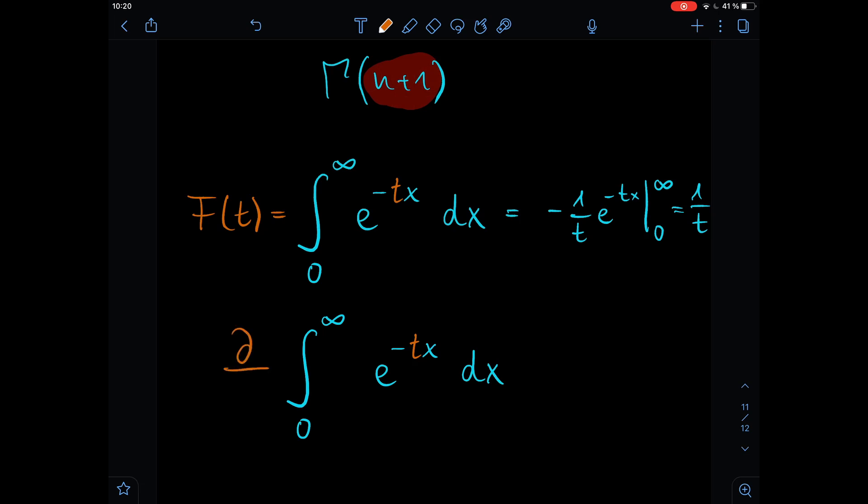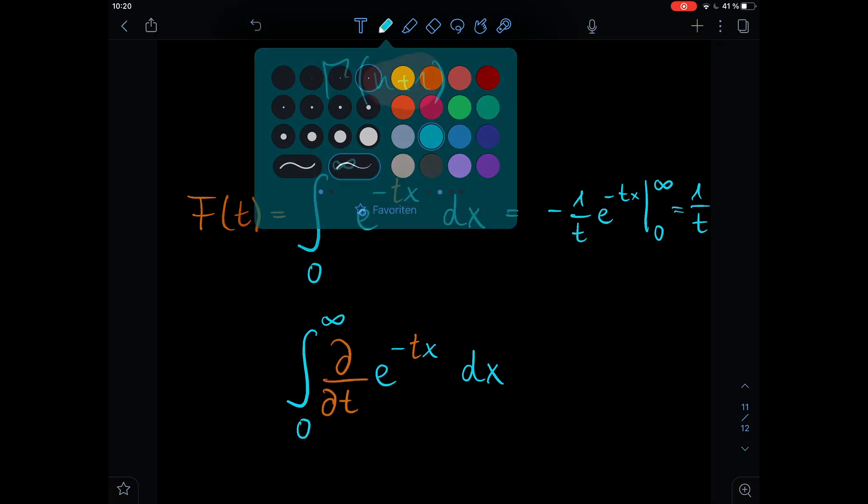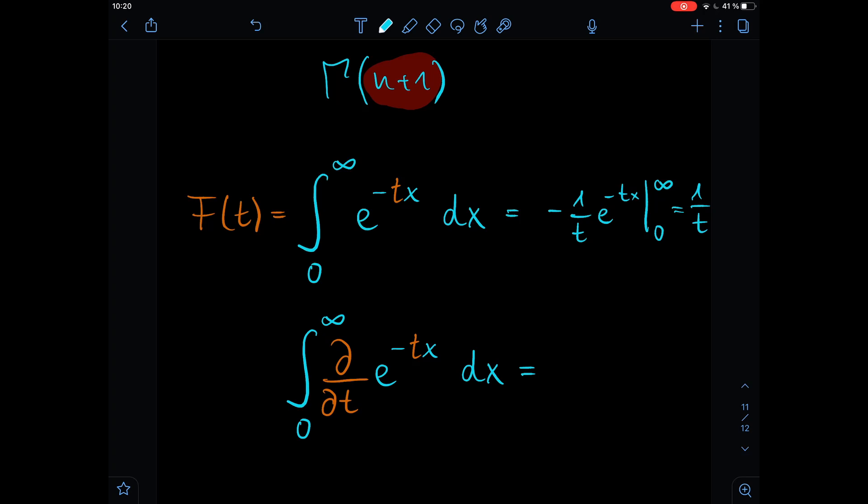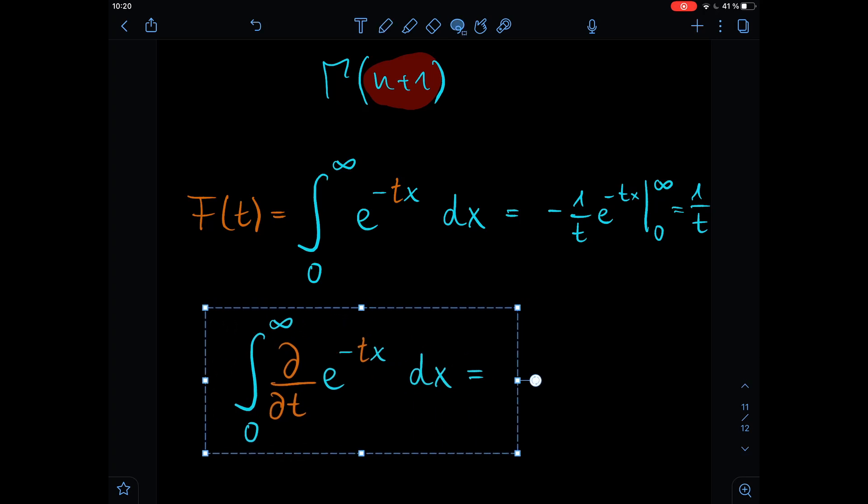and now we're going to take the derivative of this integral. So we're taking the derivative with respect to t, and of course we can just drag this derivative into the integral, and this thing now is equal to the derivative of 1 over t with respect to t.